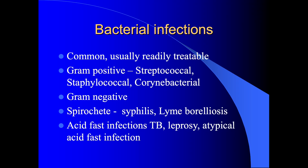Bacterial infections are important because they're common and usually readily treatable. Infections tend to be caused by gram-positive organisms such as streptococci, staphylococci, and corynebacteria. Gram-negative infections caused by pseudomonas are less common. Spirochete infections produce conditions such as syphilis and Lyme disease. Finally, acid-fast infections include tuberculosis of the skin, leprosy, and atypical acid-fast infections such as fish tank granulomas.